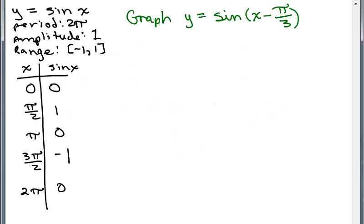First we have to know our basic sine function, y equals sine x. Remember we have a period of 2π, amplitude of 1, range of negative 1 to 1, and these are our five key points or ordered pairs: 0, 0; π/2, 1; et cetera.